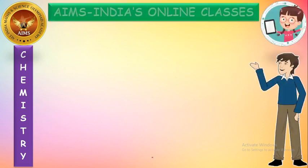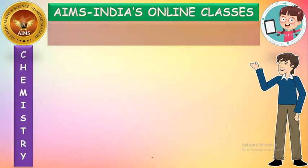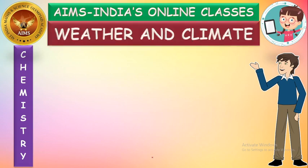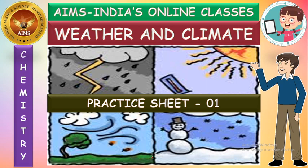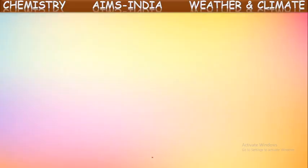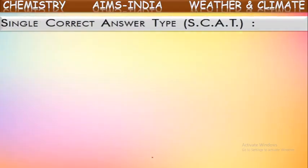Hello students, welcome to AIMS India Online Classes. This is the chemistry session. Here we are discussing the chapter weather and climate. In this session we are going to practice based upon this chapter. We are going to see a practice sheet related to this chapter with completely single correct answer type questions. There will be four options, out of which one will be the correct answer. Read the question and answer carefully.